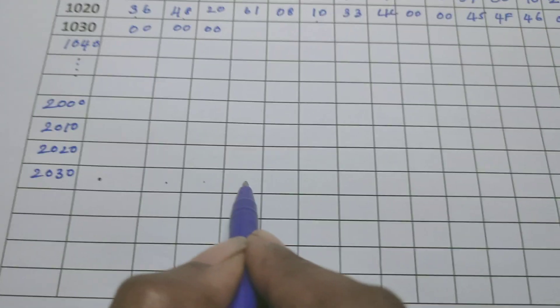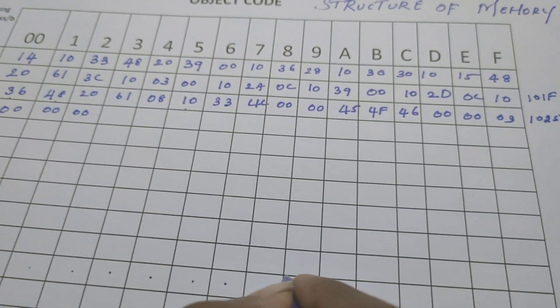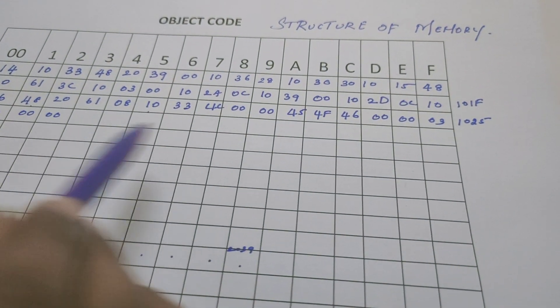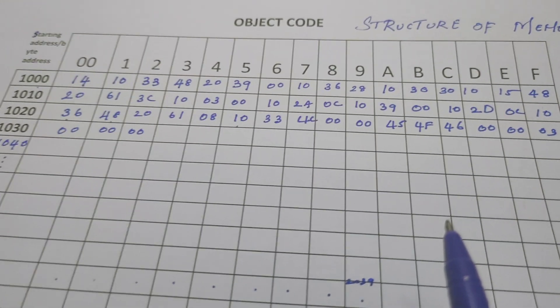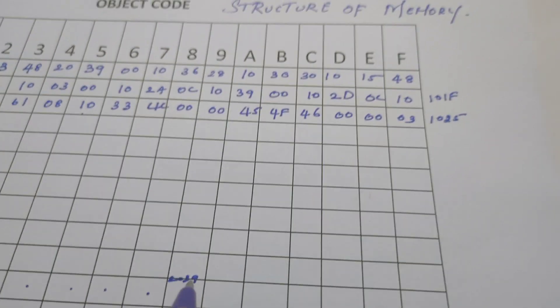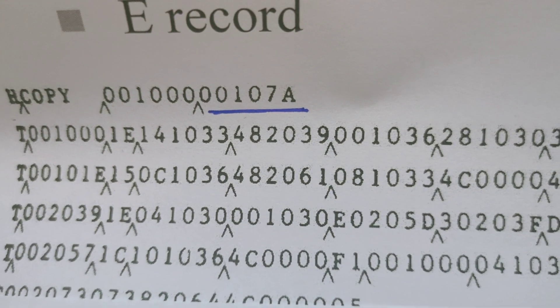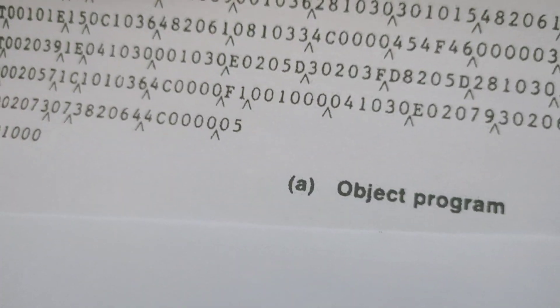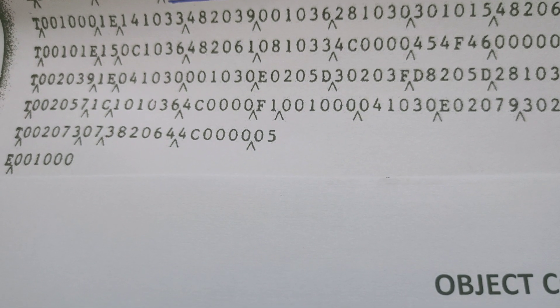Address 2039 is located at: 2030 is here, then 31, 32, 33, 34, 35, 36, 37, 38, 39. The gap between 1033 and 2039 — those memory locations are reserved by the program for storing some data using assembler directives like RESW, RESB, BYTE, WORD, etc. We are not supposed to load object code there. From address 2039, we load the next object code: 0410, 30, etc. Every text record is written into memory by the loader this way.